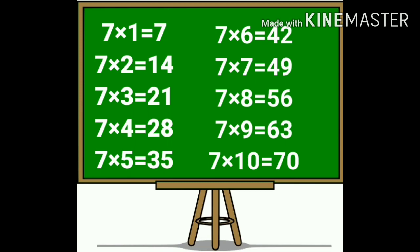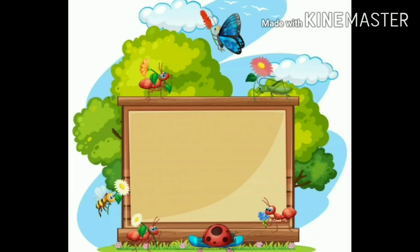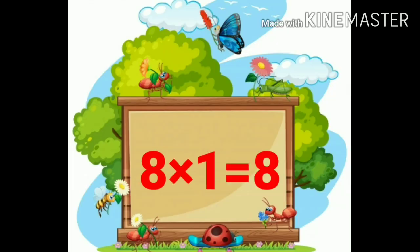Again: seven ones are seven. Seven twos are fourteen. Seven threes are twenty-one. Seven fours are twenty-eight. Seven fives are thirty-five. Seven sixes are forty-two. Seven sevens are forty-nine. Seven eights are fifty-six. Seven nines are sixty-three. Seven tens are seventy.